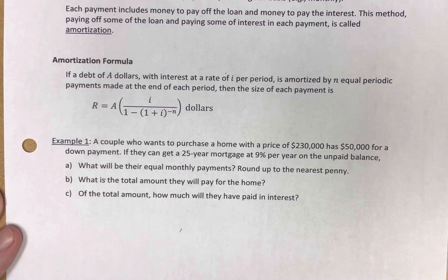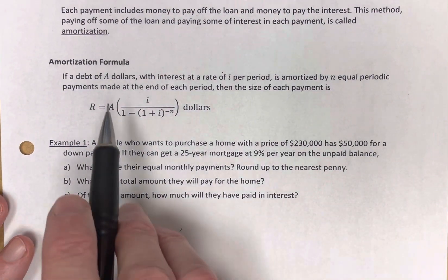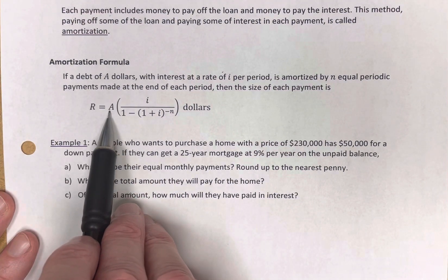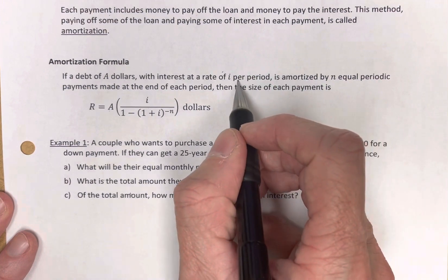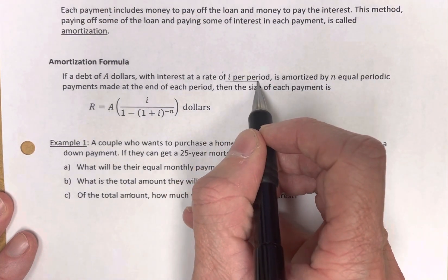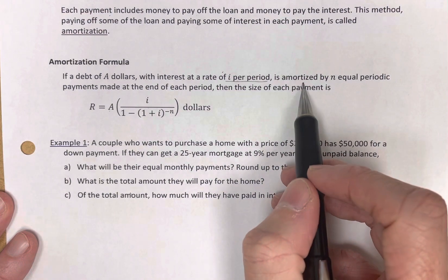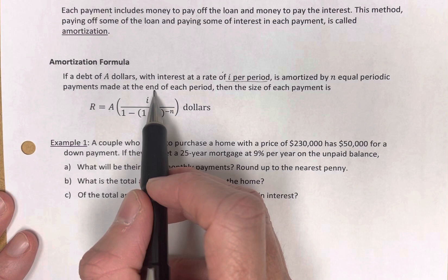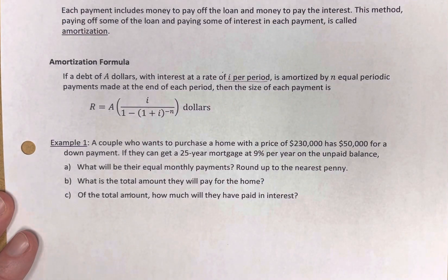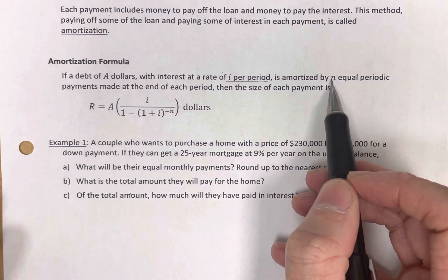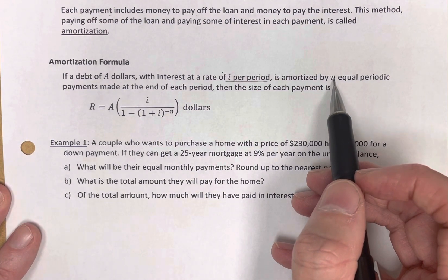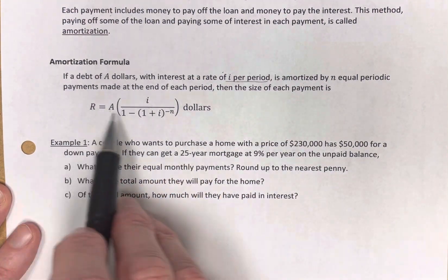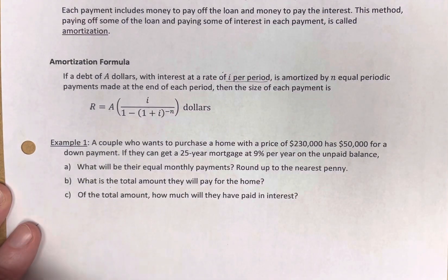The amortization formula is this one here. I have a debt of A dollars. I have an interest rate of i per period. We've seen this i per period before. And we're going to amortize it with n equal periodic payments made at the end of each period. And again, this is almost always months. Then we can calculate the size of each payment using this formula. The size is R.